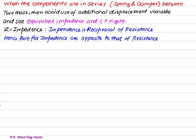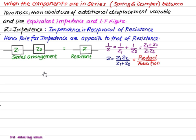The equivalent impedance. If we represent the impedance by Z, then impedance is the reciprocal of resistance. Hence, the rule of impedance are exactly opposite of the rule of resistance that is used in electric network. Suppose we have Z1 and Z2 are the impedance in the series. The resultant is Z.